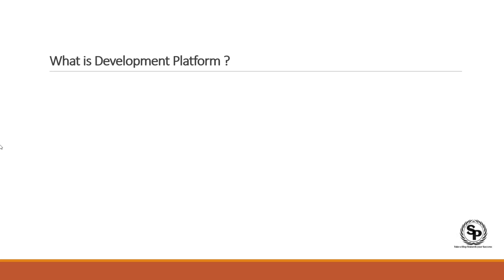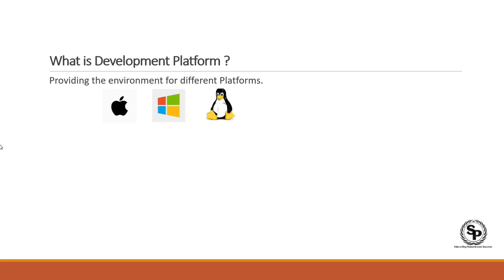Let's understand what a development platform means. It is an environment which helps us in developing software for different kinds of platforms — iOS, Windows, Linux, Android. Angular provides you this development platform where you can create an application that will run on every different kind of platform and even different hardware — mobile phones, tablets, desktops, and laptops.